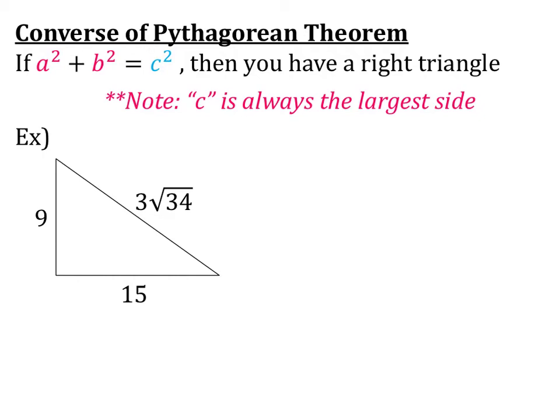Also make sure you note that C is always your largest side. So in this example below, we can see we have 3 root 34. Well, we can't really compare if 3 root 34 is larger than 15, so we need to type it in our calculator and find the decimal approximation. So when I type that in my calculator, I see that 3 root 34 is about 17.5.